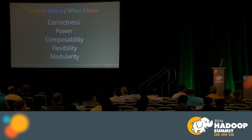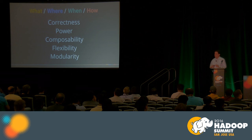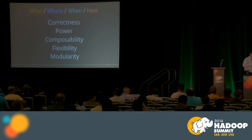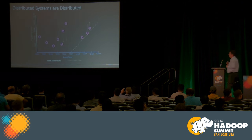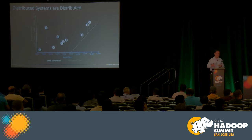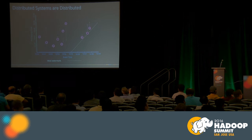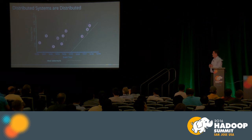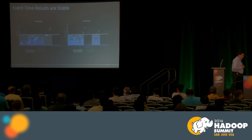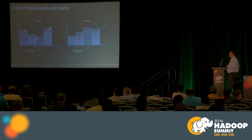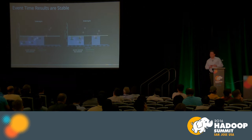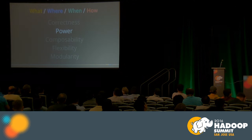These are the key questions in the Beam model: what, where, when, and how. Are these the right questions? To argue that they are, I'll show that this model is correct, powerful, composable, flexible, and modular. First, correctness: distributed systems are hard, skews vary, elements can come in different orders. The system is correct if regardless of order it produces the same elements. As we've seen, irrespective of ordering, the pipeline in this model produces the same results — event time results are stable.